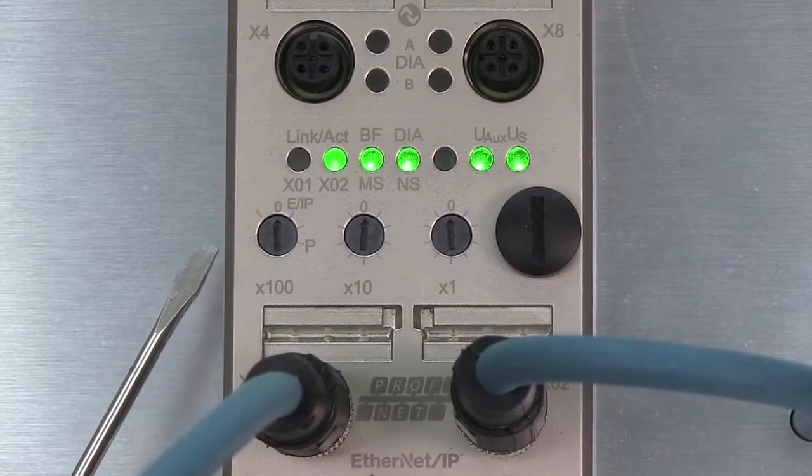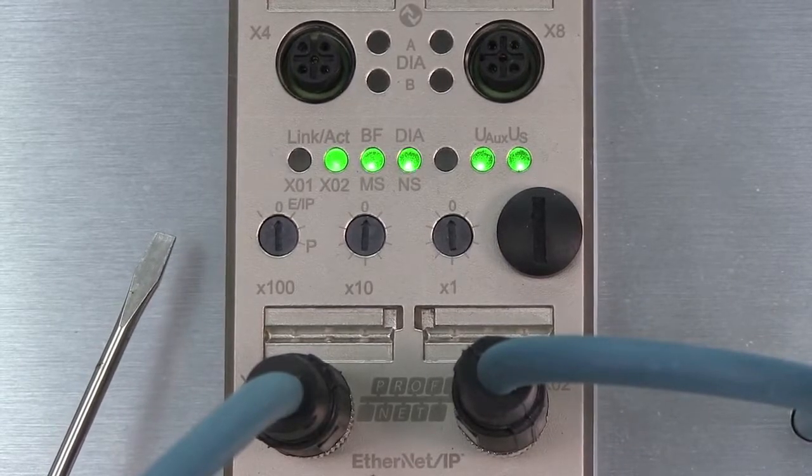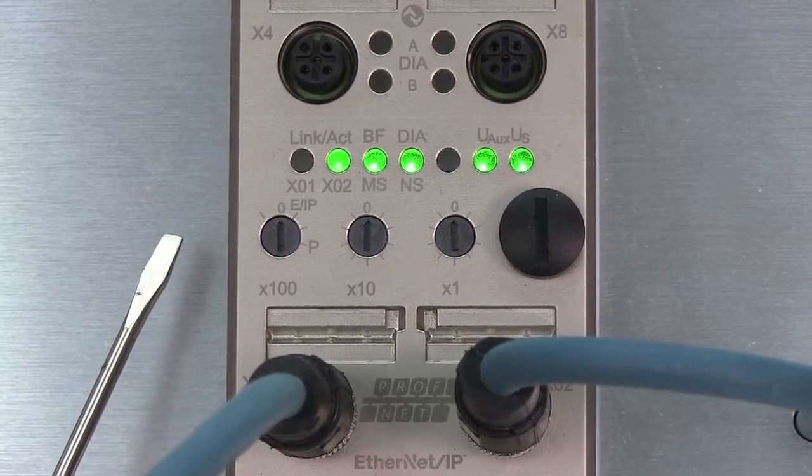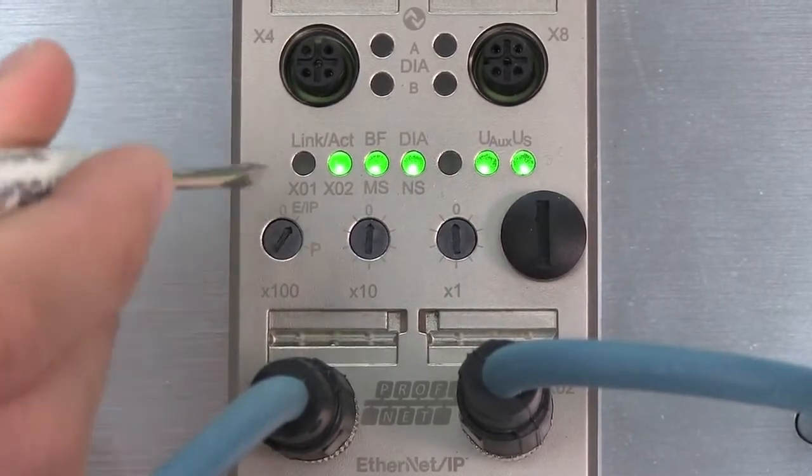The first rotary switch, X100, is used to set the protocol. Since we will be using Ethernet IP as the protocol, we will set X100 equal to 1.